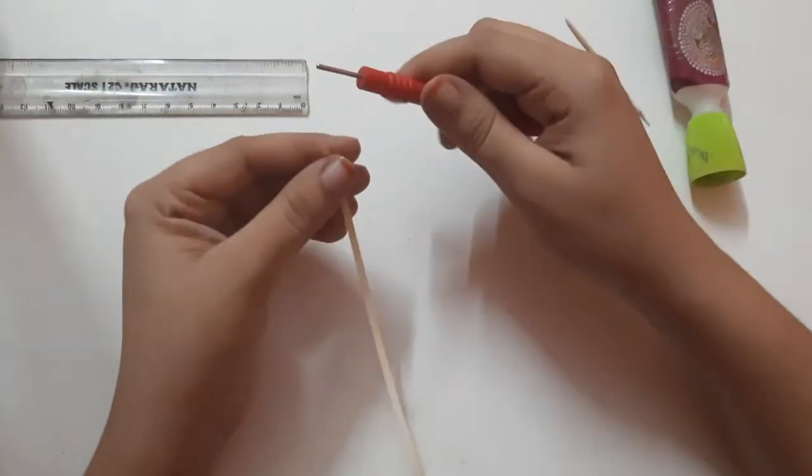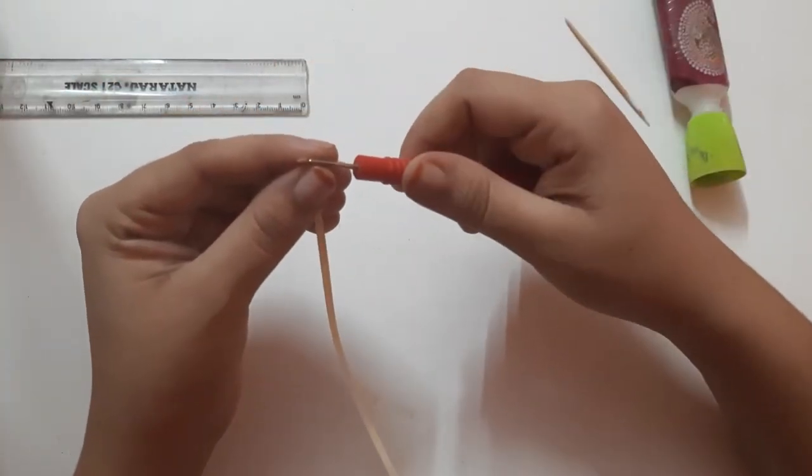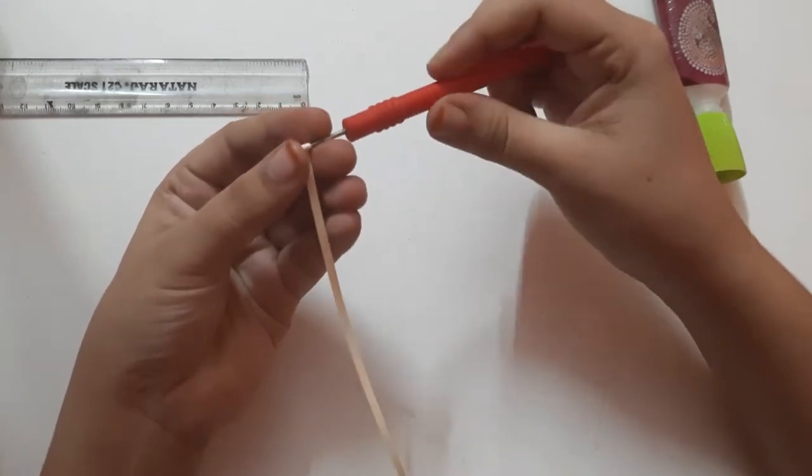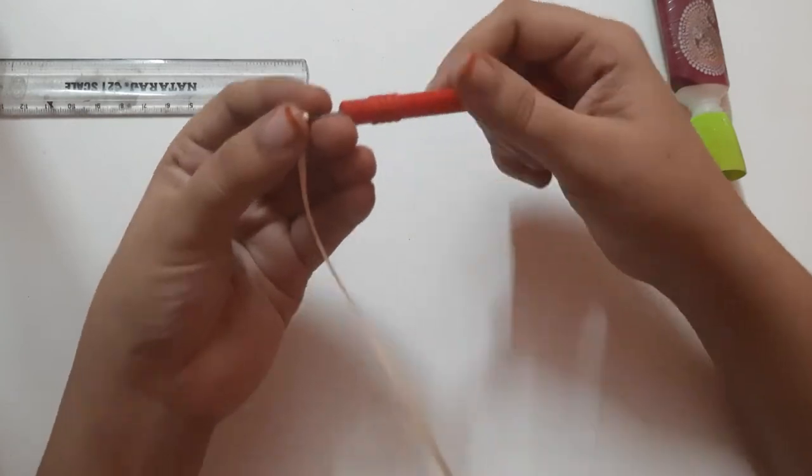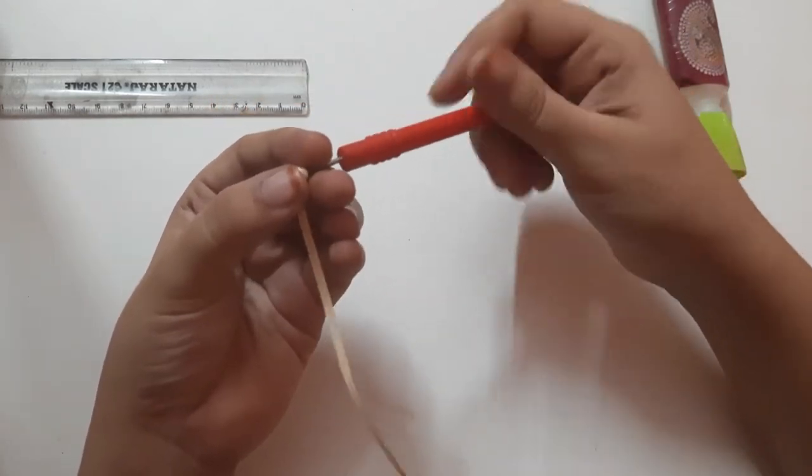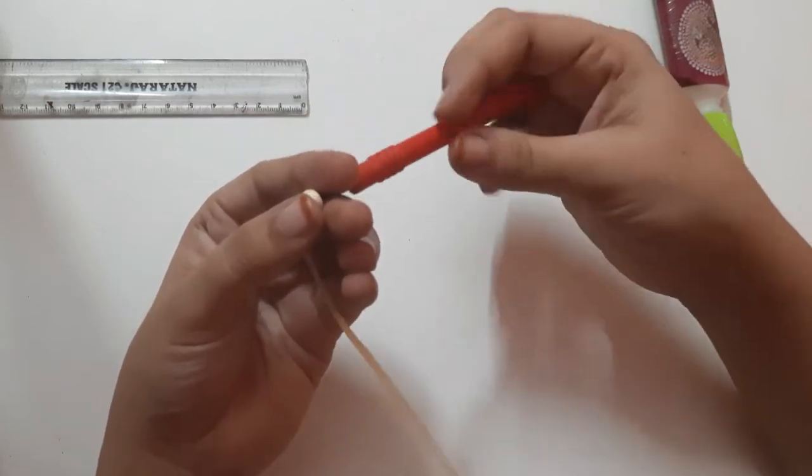After attaching the quilling paper, I have taken the quilling needle to make a tight coil. The tight coil which we are making should be same size. Here I am going to make two tight coils.